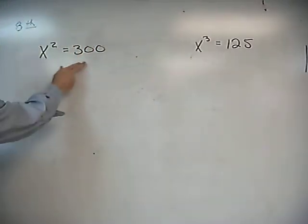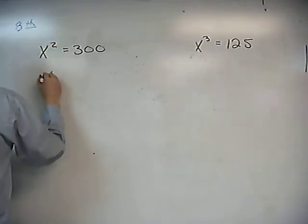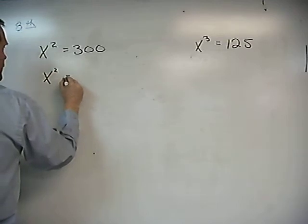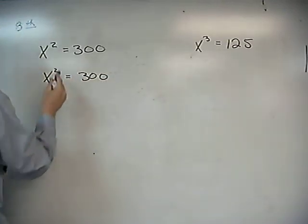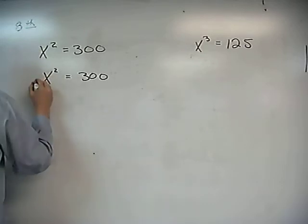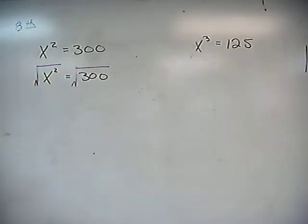Over here, you guys will remember that when we want to get rid of the square, we want to have x all by itself. There's something special that we do to both sides of the equation. Whatever we do to the left, we have to do to the right. I am going to take square root of both sides.